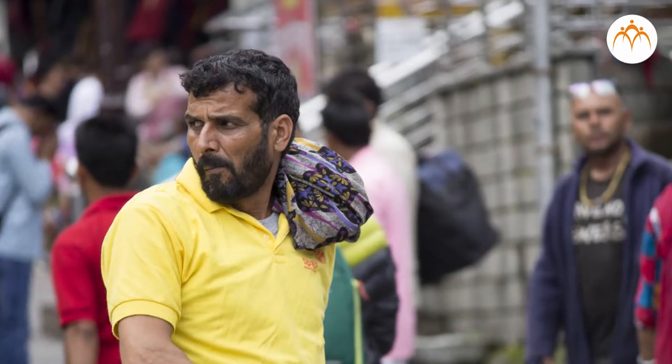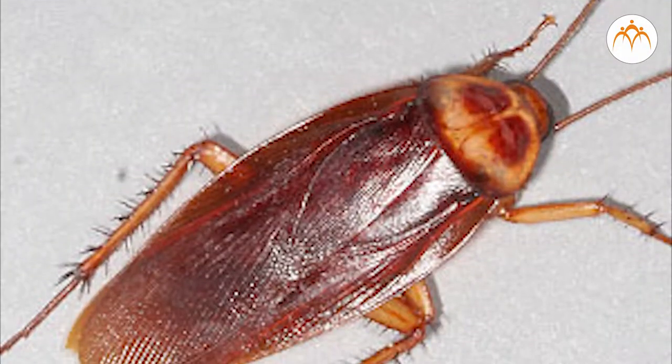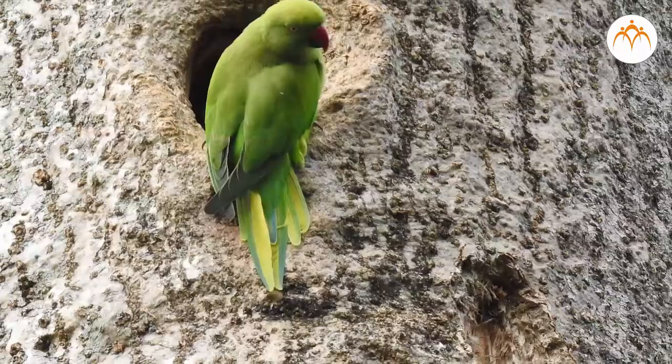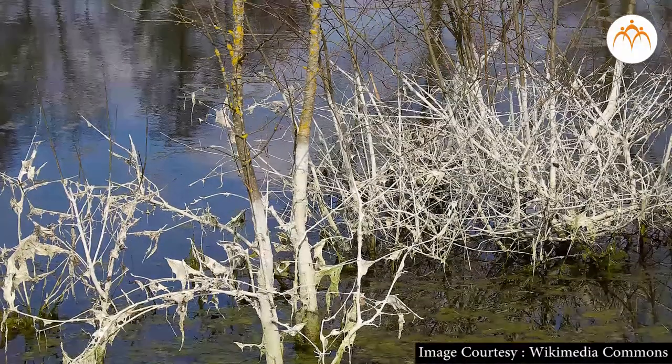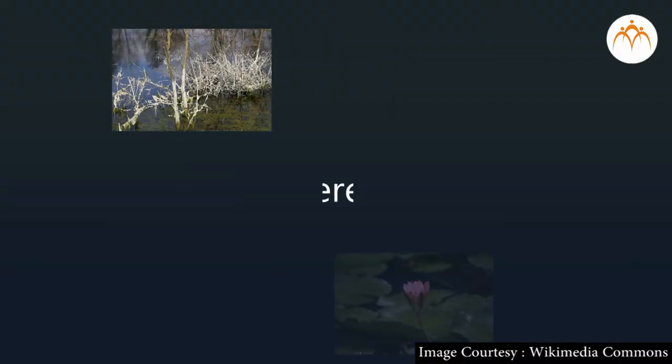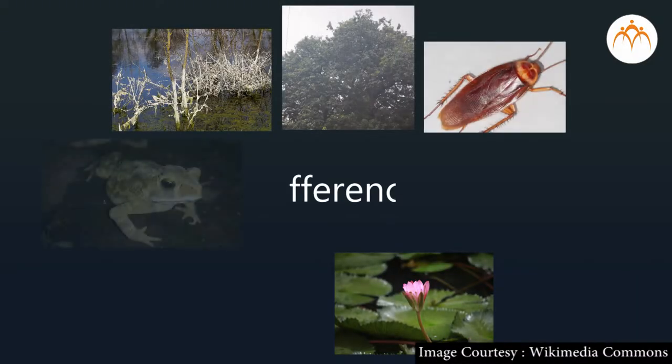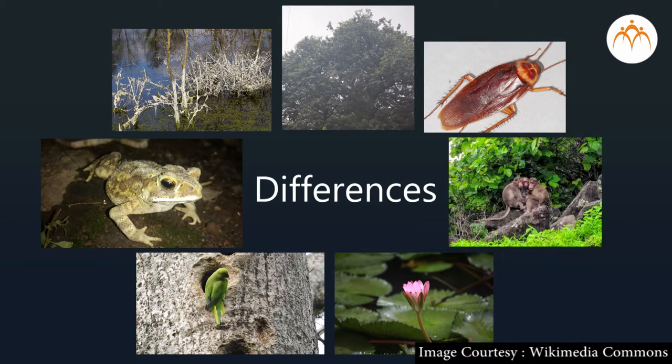Students, we see a variety of organisms around us — for example, man, mango tree, monkey, cockroach, frog, parrot, Spirogyra, etc. If you start observing them, you will realize that they look different, their food is different, and so on. So if you have to study them, will it be possible? It is really difficult to study them without classification.